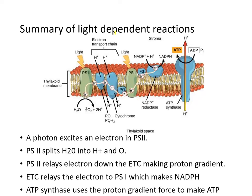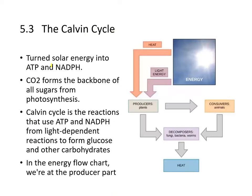Summary of the light-dependent reaction: A photon excites an electron in photosystem II. Photosystem II splits water into protons and oxygen. Photosystem II relays the electron to photosystem I using the electron transport chain, and in doing so produces the proton gradient. In photosystem I, the electron is used to produce NADPH by the NADP+ reductase. And of course, ATP synthase uses the proton gradient to make ATP. Let's stop there for right now.